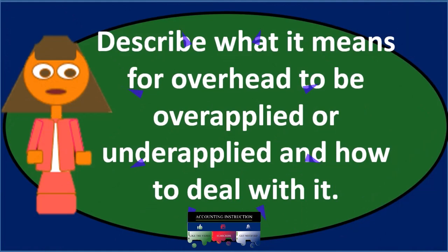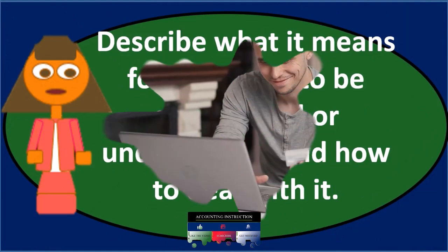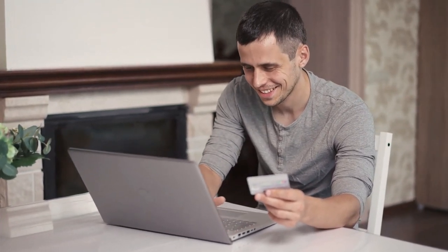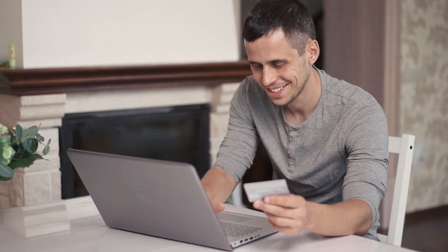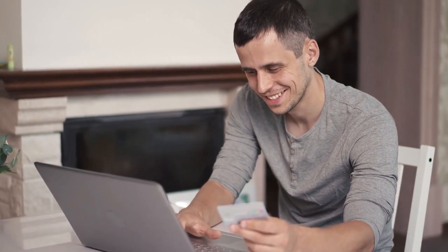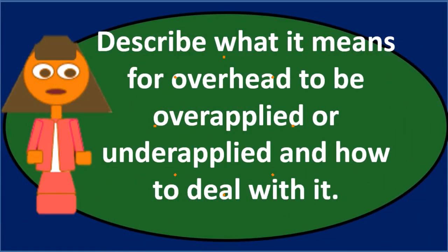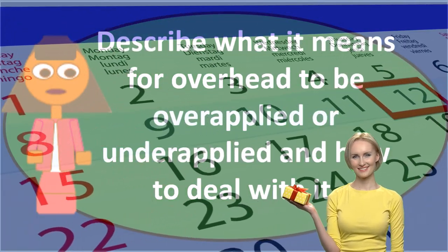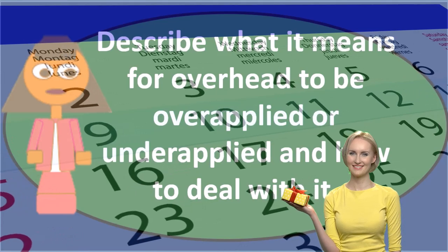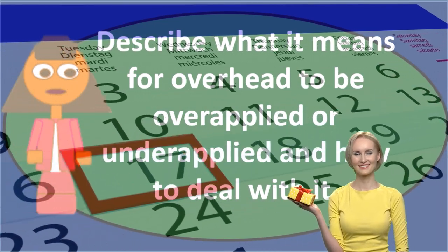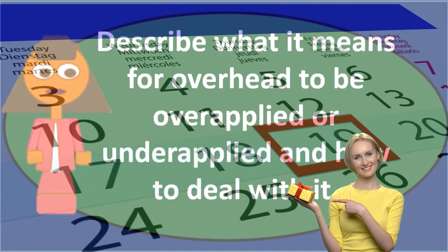On the other hand, if when we applied it out using our estimate the credit was larger than the debits, we're left with a credit balance in the overhead account. That means we applied out more overhead than we actually incurred. We would only be able to see this at the end of the month, and therefore we would have over applied overhead, leaving a credit balance.